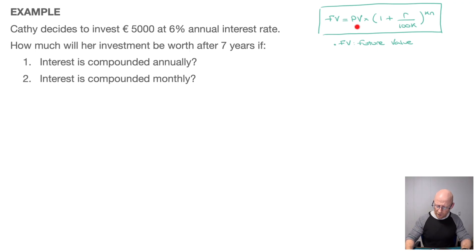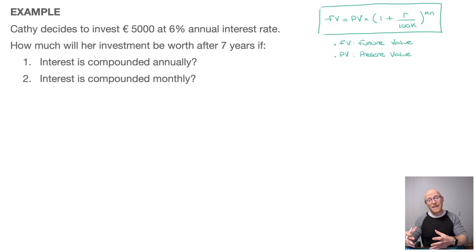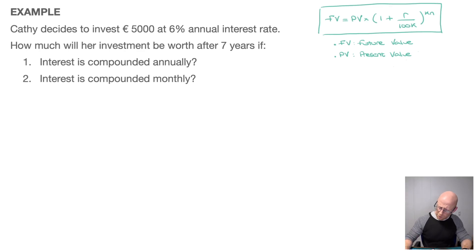Next, PV stands for present value. To be perfectly honest, I find the term present value a bit misleading at times. What I tell my students is that the present value is simply the initial amount we invest — the amount we invest before we earn any interest on it.